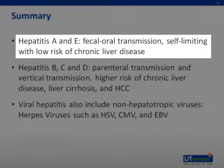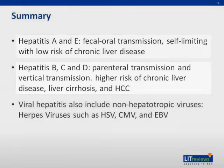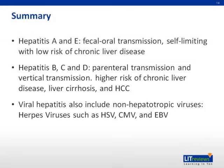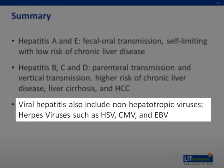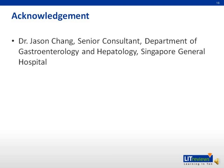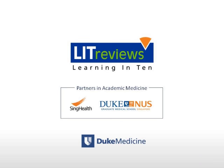In summary, hepatitis A and E are transmitted via fecal-oral transmission with lower risk of chronic liver disease. Hepatitis B, C, and D are parenterally or vertically transmitted with higher risk of chronic liver disease, liver cirrhosis, and hepatocellular carcinoma. Other etiologies of viral hepatitis include EBV, CMV, HSV, and HIV. Here are some of the key references used in this presentation, and special thanks to Dr. Jason Chang for his help in preparation. Thank you very much for listening.